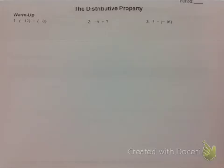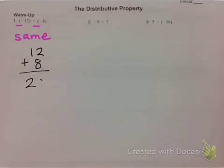Remember our rule for negatives: same signs add, different signs subtract. So for number one, I have a negative and a negative — that's the same sign. So I add my two numbers. Please remember that your bigger number tells you the sign, so my answer is negative 20.